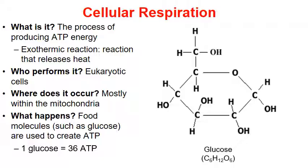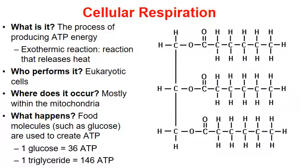For every single molecule of glucose — C6H12O6 — through cellular respiration, 36 molecules of ATP can be produced. That's a pretty good investment, turning one molecule of glucose into 36 molecules of ATP. It's even more when we look at triglycerides. A single triglyceride, which is a lipid with three fatty acids attached, can produce up to 146 ATPs. This is generally where we get ATP from — carbohydrates such as glucose and the lipids, the triglycerides, that we consume in our diet.